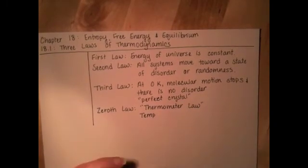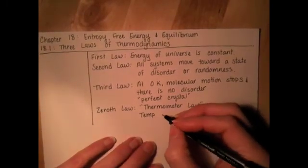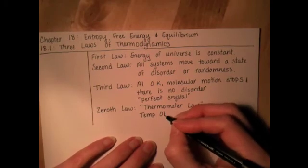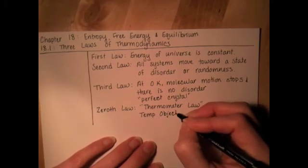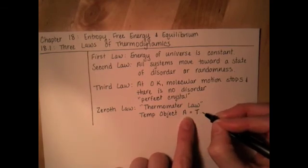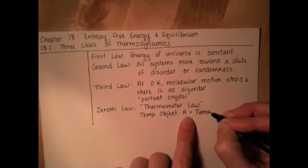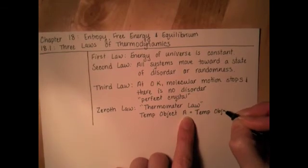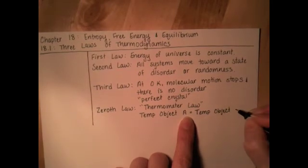But the thermometer law or the zeroth law goes like this: it says if you have two objects, object A and object B and you take the temperature of the two of them, so the temperature of object A and you take the temperature of object B and let's just say theoretically that those two temperatures are equal to each other. So we'll say object A is 10 degrees and object B is 10 degrees.